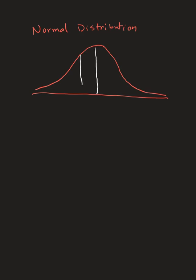As a reminder, the middle is the mean. You go up one standard deviation and down one standard deviation, and 68% of the data would be within that area — so 34% on each side of the mean.